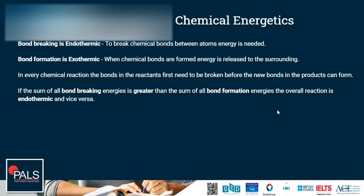Why do some reactions release energy and others absorb it? Chemical energy mainly relates to the energy stored in chemical bonds. Whenever bonds are broken, that is an endothermic process — energy is needed. Whenever bonds are formed, that is an exothermic process — energy is released to the surrounding.